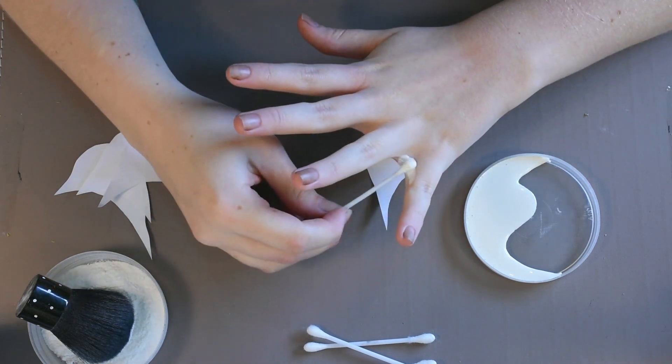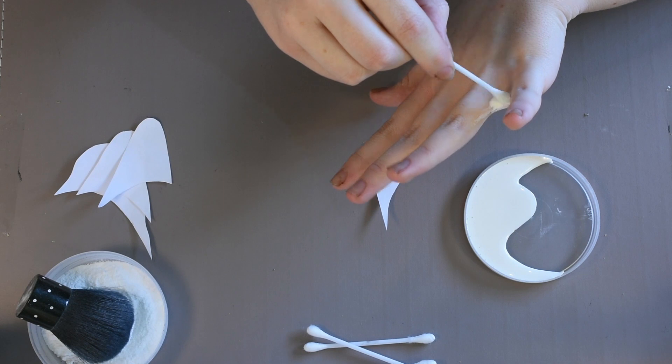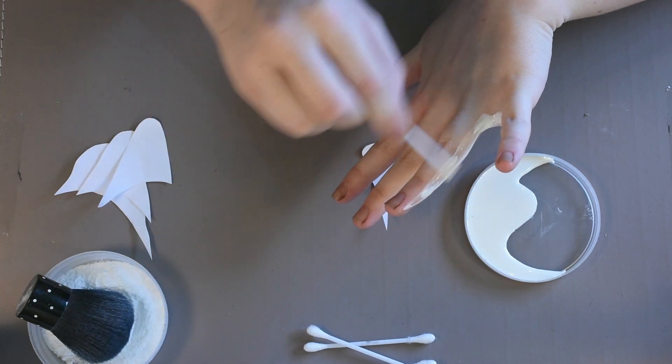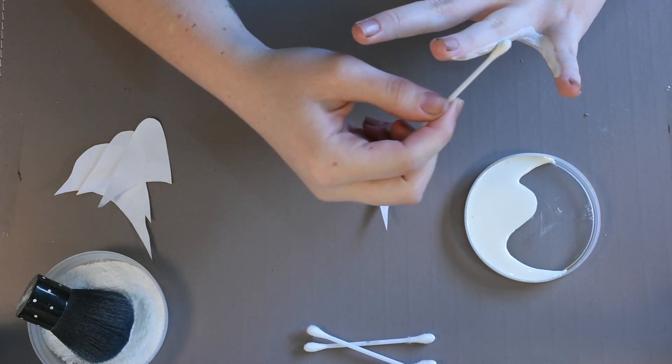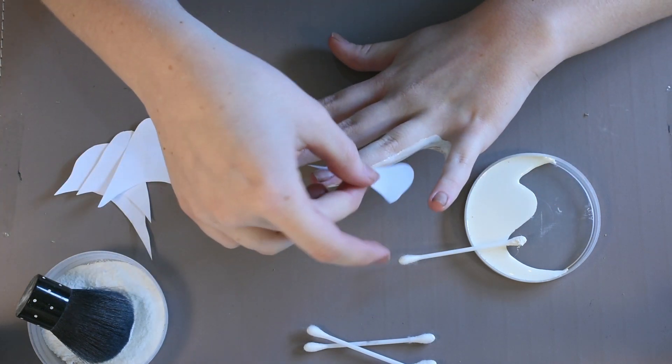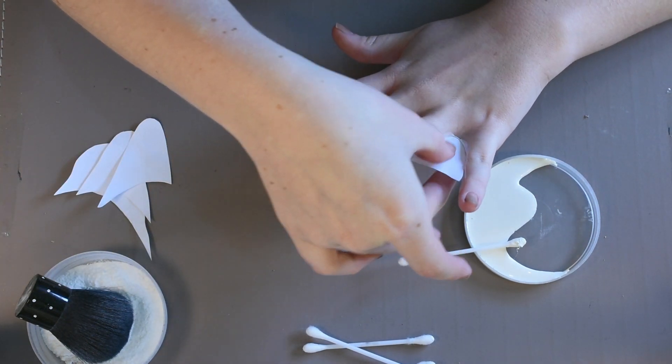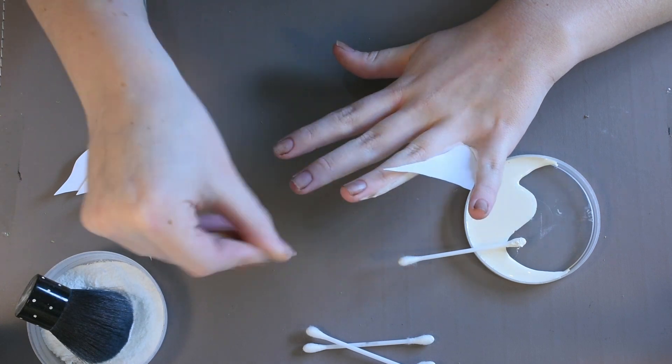To start adding the webs, you want to add a good layer of liquid latex to the insides of one pair of your fingers. Using a cotton bud, carefully add your first web in between your fingers. Make sure you are happy with the placement because for the most part it's not moving after this.